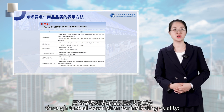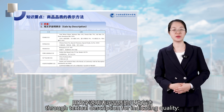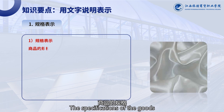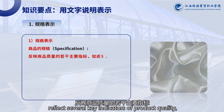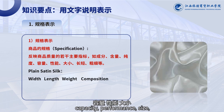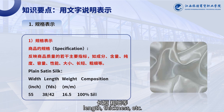First, let's understand several methods of representation through textual description for indicating quality. Method 1: Specification representation. The specifications of the goods reflect several key indicators of product quality, such as composition, content, purity, capacity, performance, size, length, and thickness.